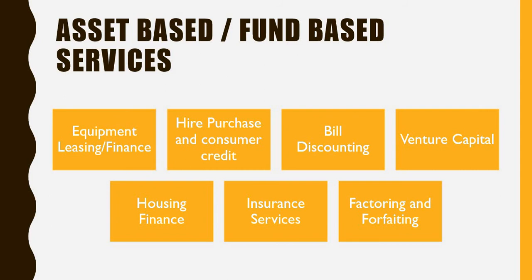The first asset-based service is equipment leasing or finance — they provide you a facility to lease or finance a particular asset. The second type is hire purchase or consumer credit. Similar to equipment leasing, if you want to procure an asset such as a vehicle or a mobile phone, they provide you an EMI facility. For example, Flipkart had started a 'Buy Now, Pay Later' service where you are given a facility to purchase any product from their website and then pay after 30 days.